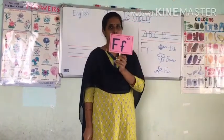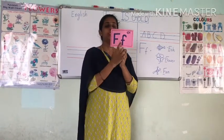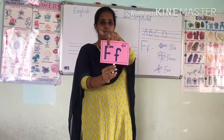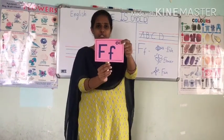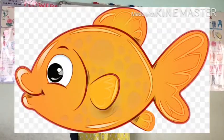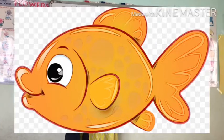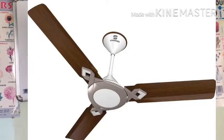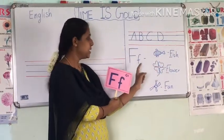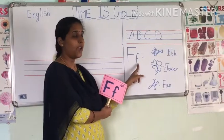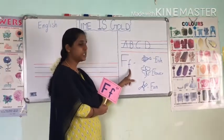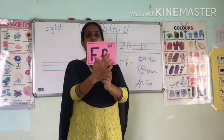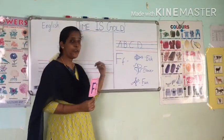Now we saw capital E and small e. Next we are going to see capital F and small f. This is capital F and this is small f. F for fish — you all know fish, right? Very good. Not only F for fish, we also have F for flower and F for fan. This is capital F and this is small f. F for fish. Understood? Shall we see how to write F in the forward note?